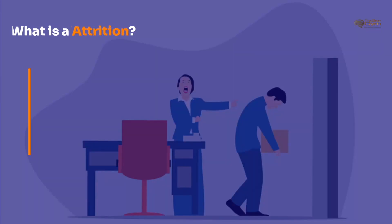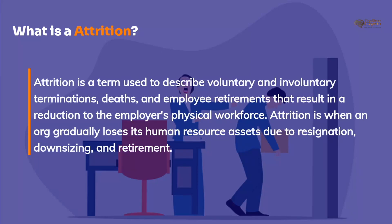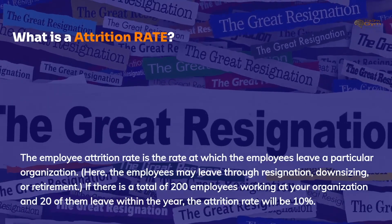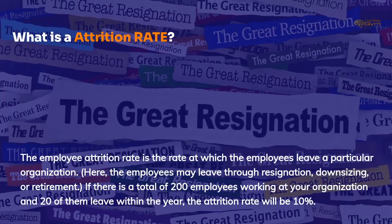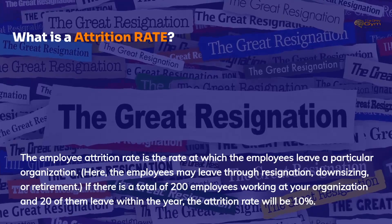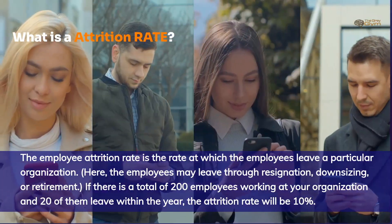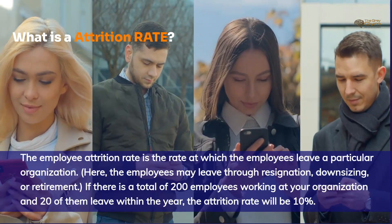What is attrition? Attrition is a term used to describe voluntary or involuntary terminations, deaths, and employee retirements that result in a reduction to the employer's physical workforce. Attrition is when an organization gradually loses its human resource assets due to resignation, downsizing, and retirement. The employee attrition rate is the rate at which employees leave a particular organization, whether through resignation, downsizing, or retirement.